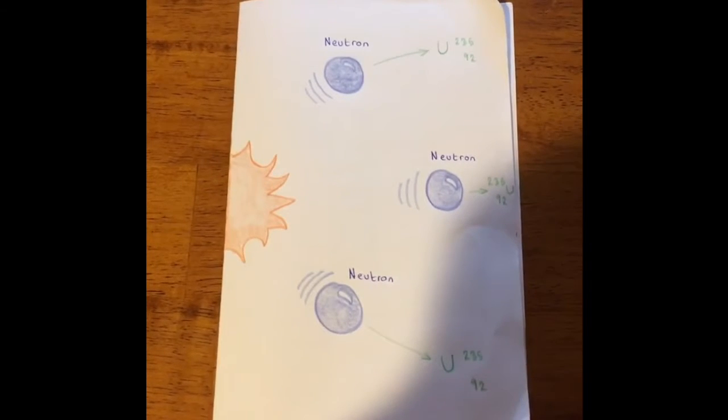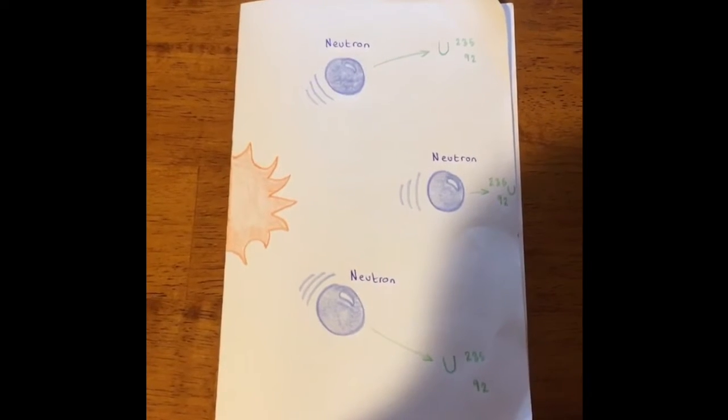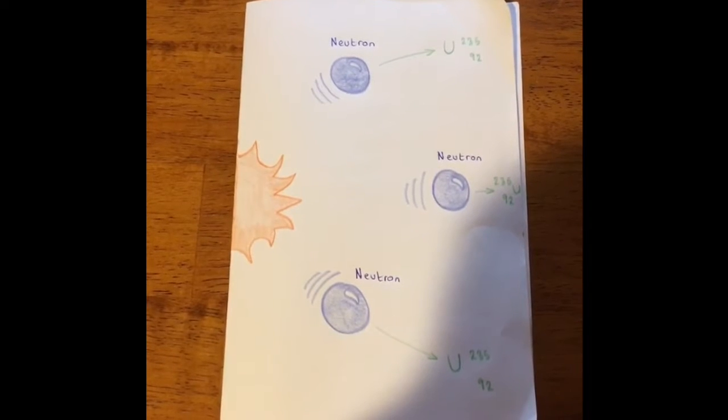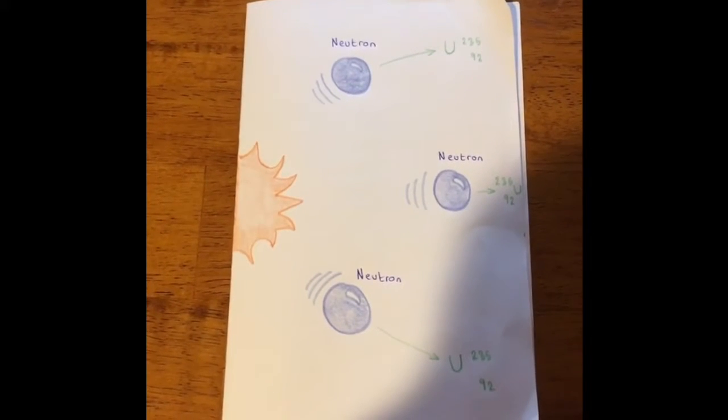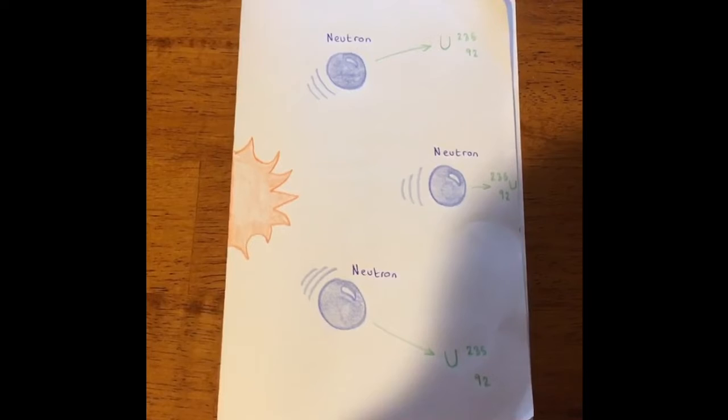These three neutrons go on to collide with other uranium-235 atoms and repeat the process. This causes an uncontrollable chain reaction and, in turn, mass destruction through the massive amounts of energy being released.